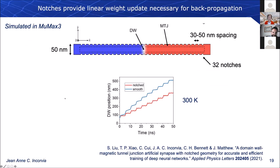This was simulated in the MUMAX3 simulator. Our magnetic wire is 50 nanometers wide and around 1.5 nanometers thick. We introduced a series of 32 notches along the edge of the device, spaced 30 to 50 nanometers apart depending on whether we use spin orbit torque or spin transfer torque, which we found greatly improves linearity — very important for backpropagation training. The domain wall position versus time shows very linear behavior for the notched device at 300 K, compared to a smooth wire with no notches.